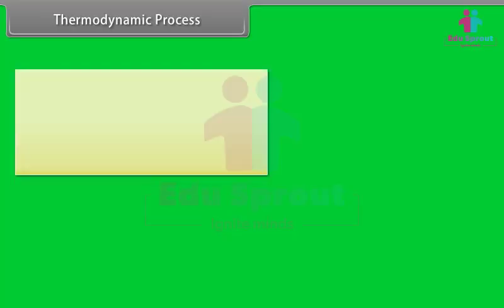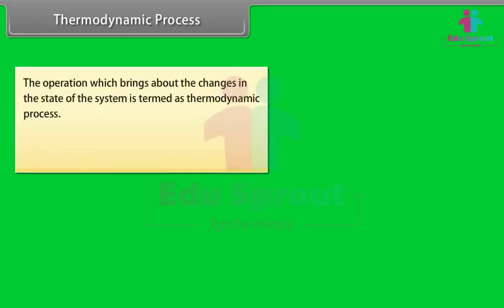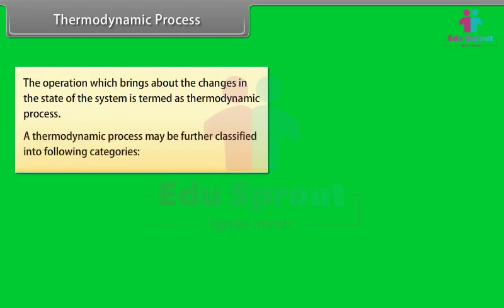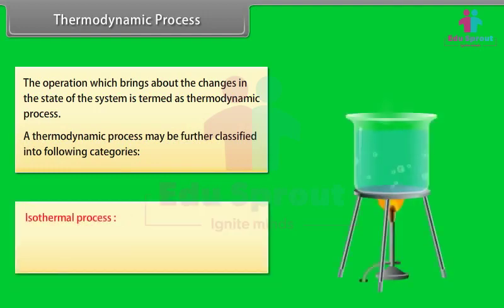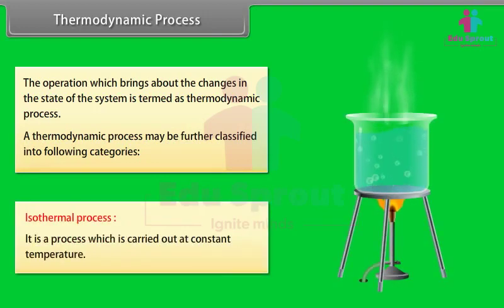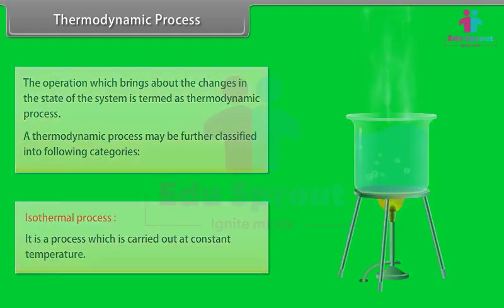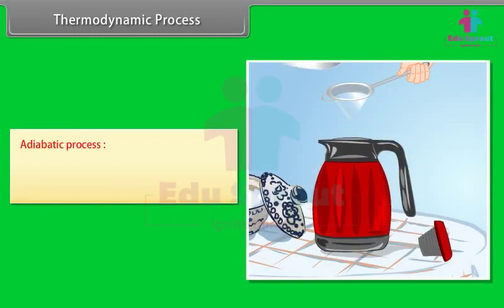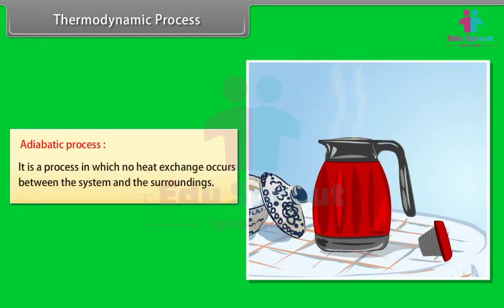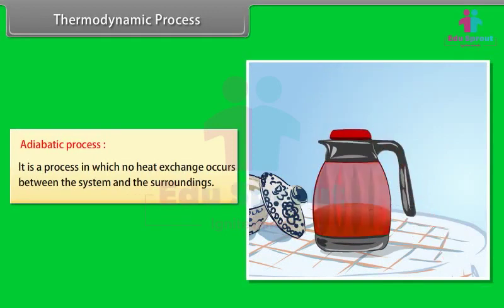Thermodynamic process. The operation which brings about the changes in the state of the system is termed as a thermodynamic process. A thermodynamic process may be further classified into the following categories. Isothermal process: it is a process which is carried out at constant temperature. Adiabatic process: it is a process in which no heat exchange occurs between the system and the surroundings.